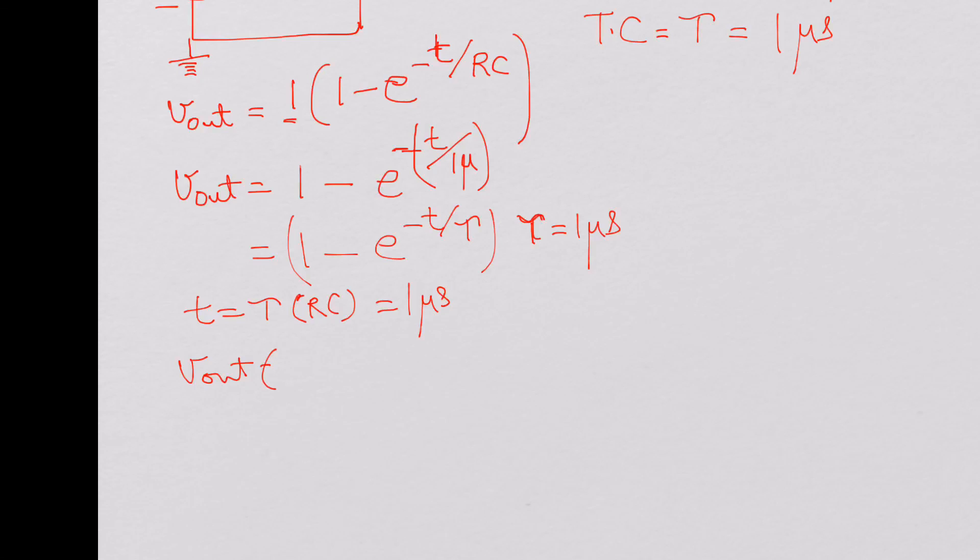V out at 1 TC is 1 minus e power minus 1 micro over 1 micro. It's e power minus 1.